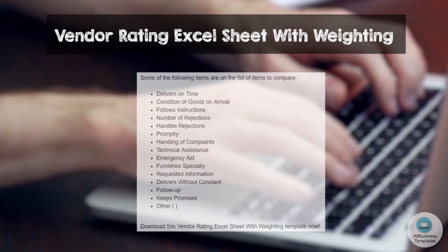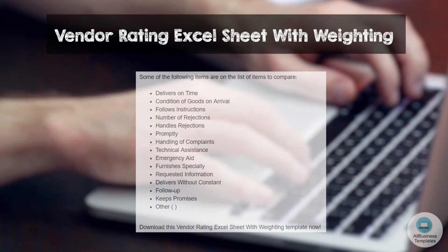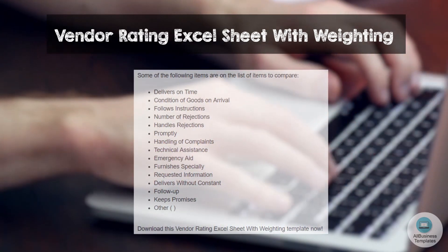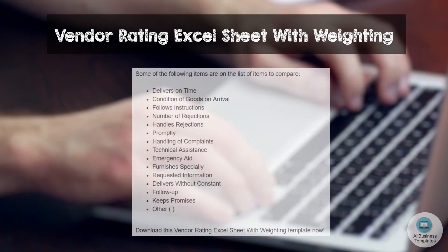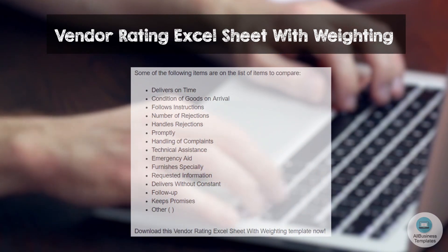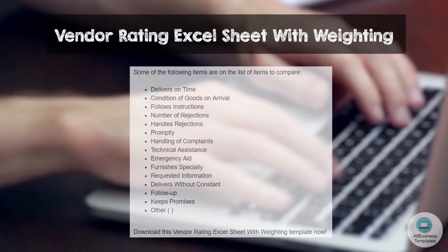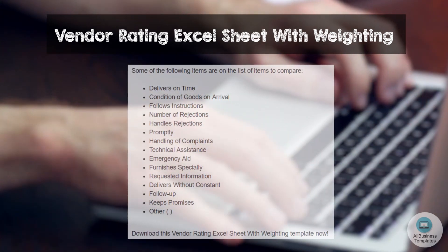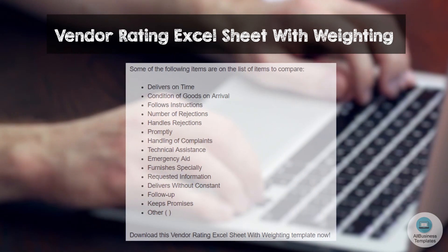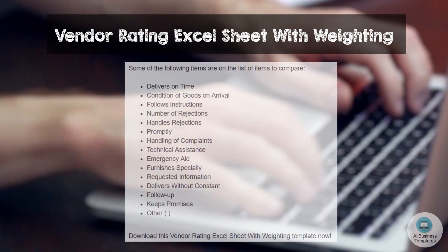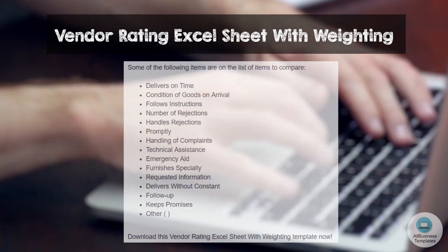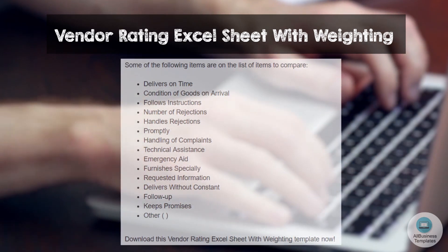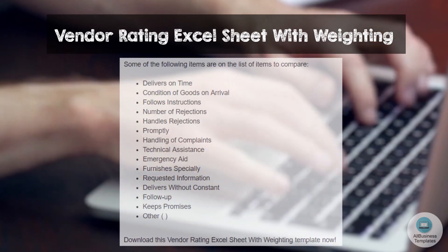Some of the following items are on the list to compare: Delivers on Time, Condition of Goods on Arrival, Follows Instructions, Number of Rejections, Handles Rejections Promptly, Handling of Complaints, Technical Assistance, Emergency Aid, Furnishes Specially Requested Information, Delivers Without Constant Follow-up.